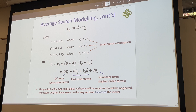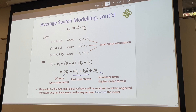Same thing with our input voltage — we have a steady state input with small deviations that are much smaller than the steady state value. We've just turned this average into an average of steady states and deviations. When you do this multiplication, we end up with our DC steady state term, plus our first order terms, and then we have our small deviations multiplied together — these higher non-linear terms. The product of the two small signal variations will be small, so going forward we'll neglect this non-linear term.